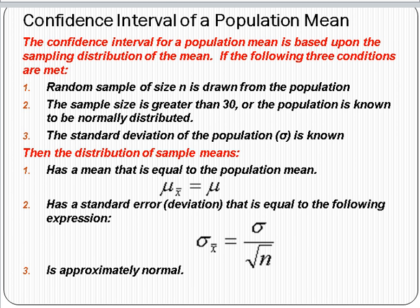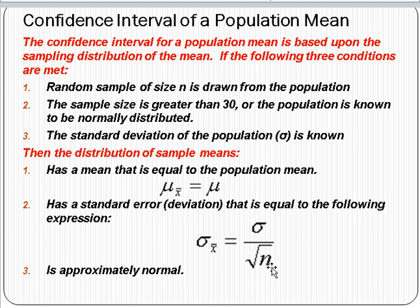The sampling distribution has a mean equal to the population mean, a standard error — also the standard deviation — equal to the standard deviation of the population divided by the square root of the sample size, and the sampling distribution is approximately normal. Normality is the key here. With normality, we can make decisions.